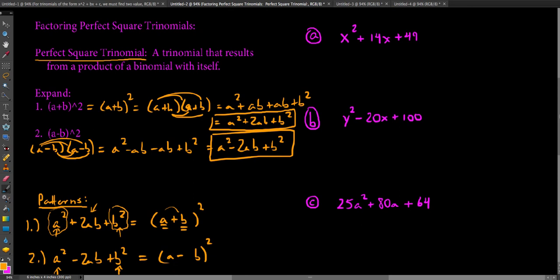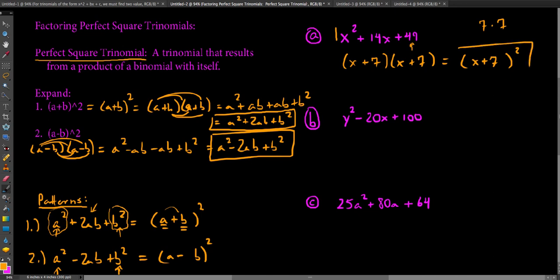Look at example a — it's a trinomial of the form x squared plus bx plus c, like we covered in the previous video. We could factor it traditionally by finding numbers that multiply to 49 and add to 14, and 7 and 7 both work. So the factors are x plus 7 times x plus 7, which is the same as x plus 7 squared. Notice: x squared is a perfect square, 49 is a perfect square, and 2 times x times 7 gives us 14x in the middle — confirming this is a perfect square trinomial.